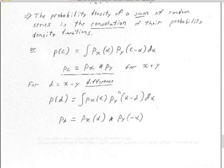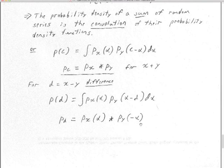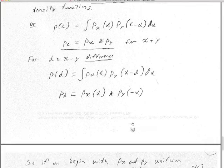What about a difference? If D = X − Y, we follow the same development and get p_D(d) = ∫ p_X(α)·p_Y(α−d) dα, which is a cross-correlation between the two probability density functions — just because we took a difference instead of a sum.